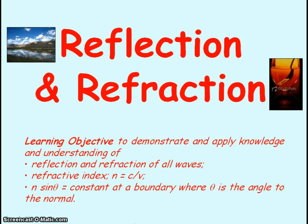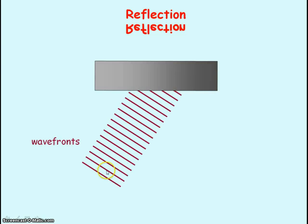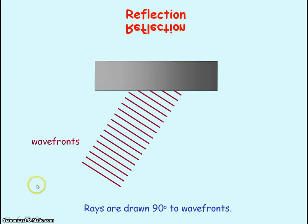We're going to be looking at reflection and refraction, which includes refractive index. Here we have wave fronts incident on a surface. The lines, for example, could be representing the crest of a wave, so the distance between the lines represents the wavelength. Rays are drawn 90 degrees to the wave front.